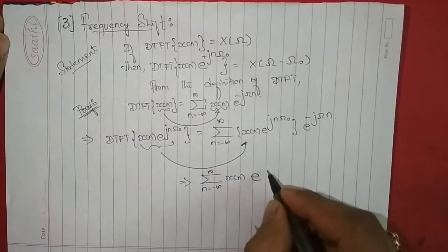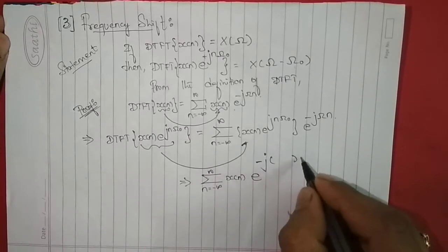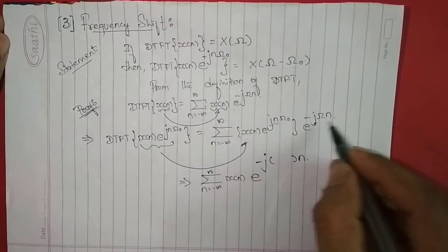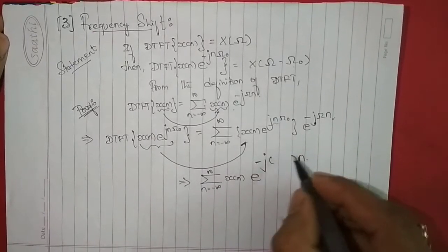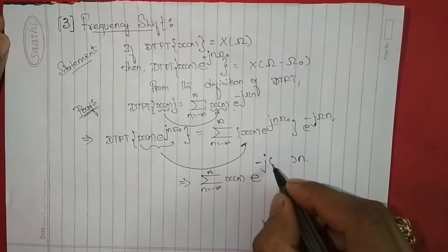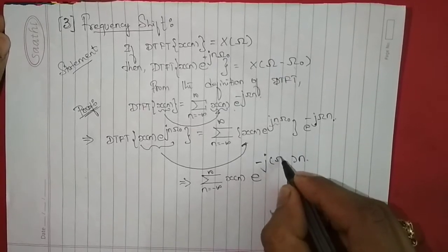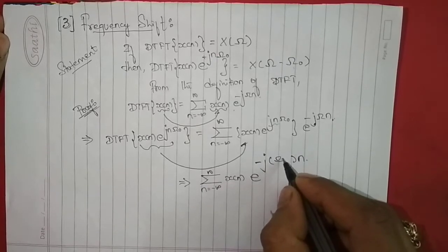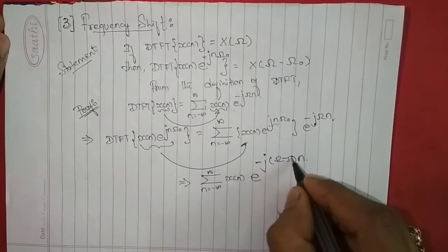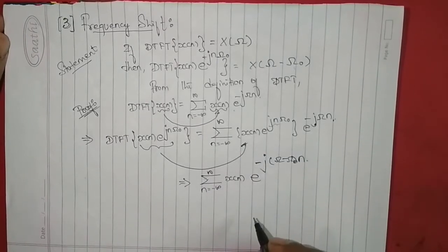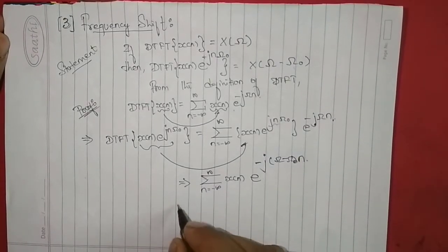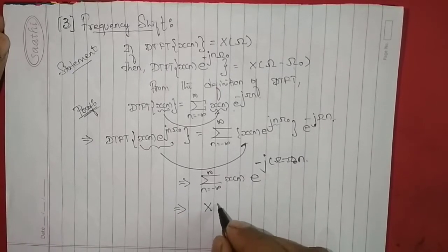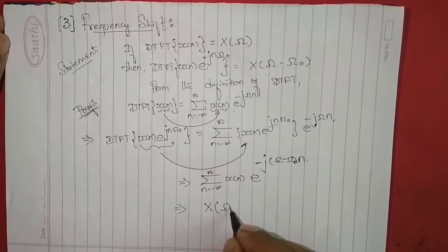This equals the summation from n = -∞ to +∞ of x(n), and taking the exponentials together, we get e to the power of -jn times (ω - ω₀). From the definition of DTFT, we can write this as capital X(ω - ω₀).